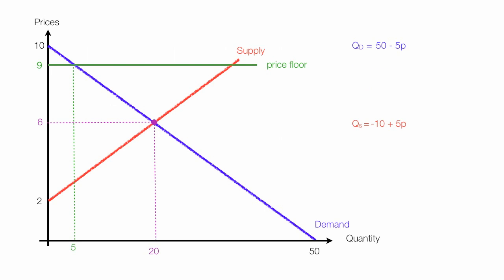Now I take the price floor of $9 and put it into the quantity supplied equation. I put 9 in for P — P stands for price. Quantity supplied is equal to negative 10 plus 5 times 9, which gives me negative 10 plus 45. Quantity supplied is 35. Where the price floor and supply curve intersect is quantity supplied.